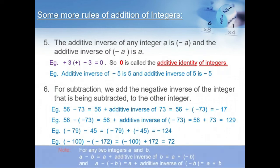A small note for y'all: for any two integers a and b, a minus b is equal to a plus the additive inverse of b, which is equal to a plus of minus b. And a minus of minus b is equal to a plus the additive inverse of minus b, which is equal to a plus b.